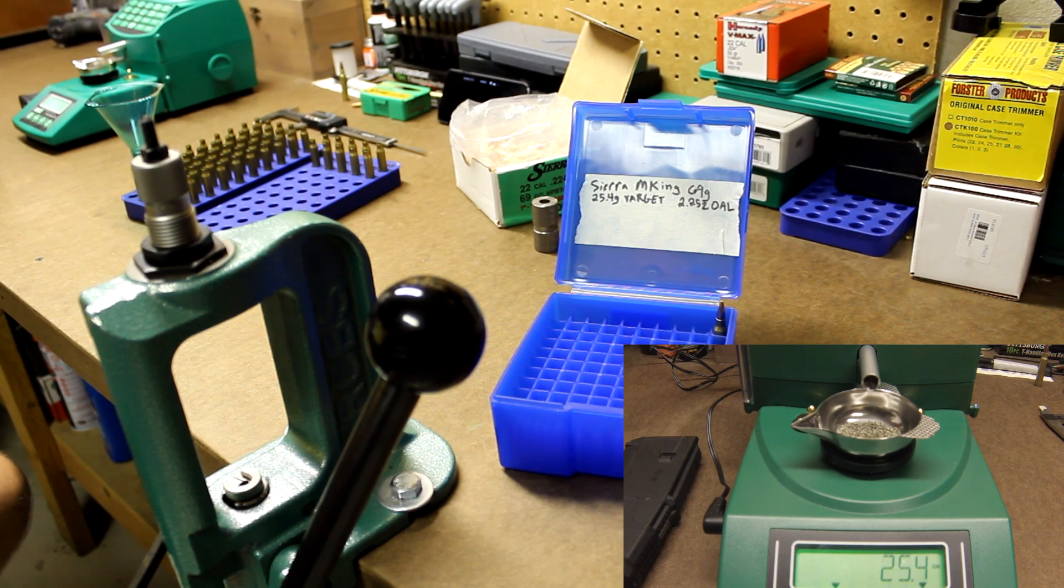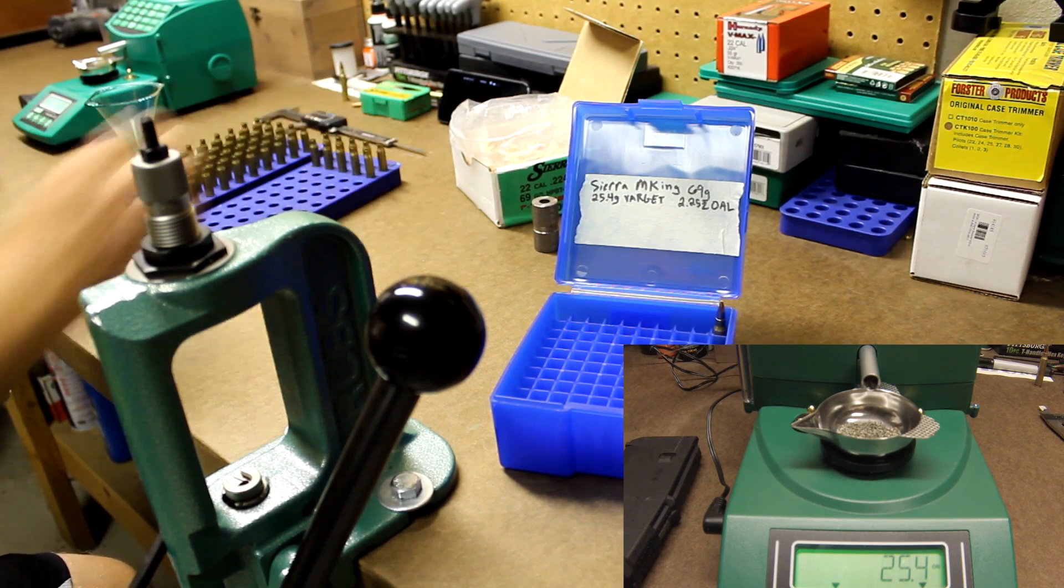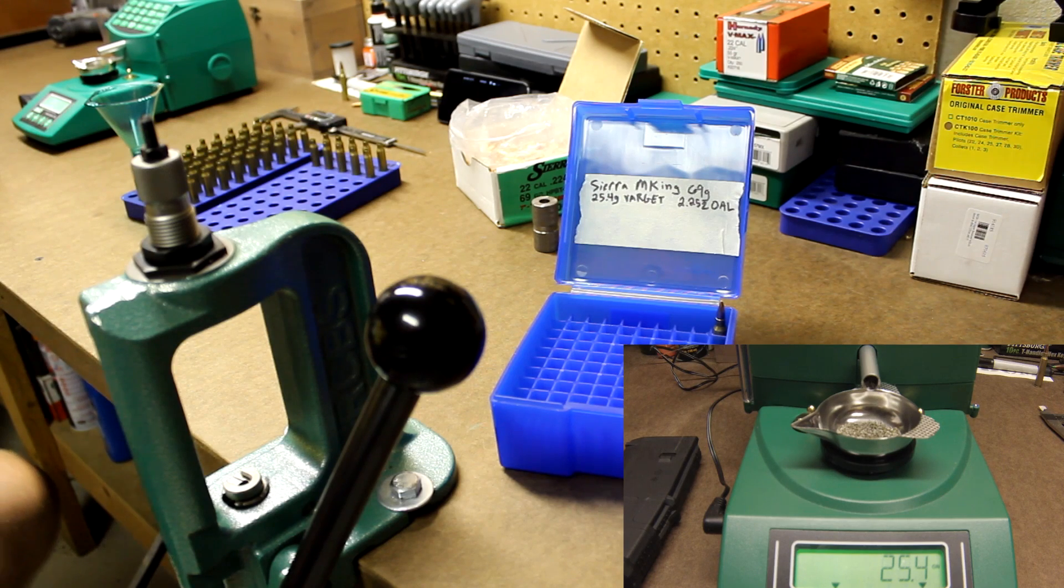At this point, you should have all of your trim brass primed and in trays like I do. You can see here each one of those is primed and trimmed. They are not filled with powder.